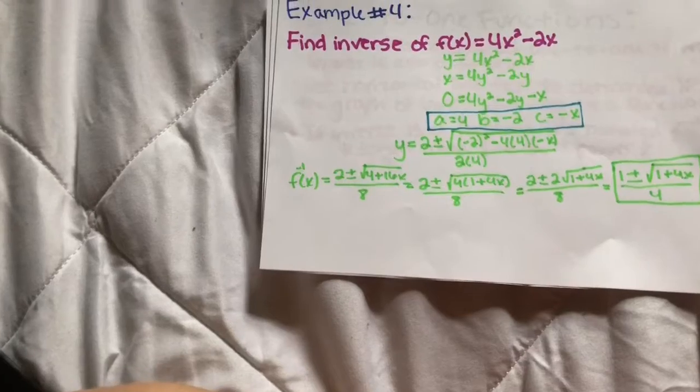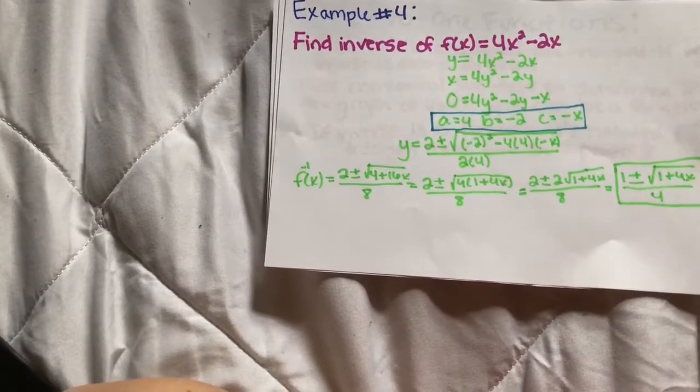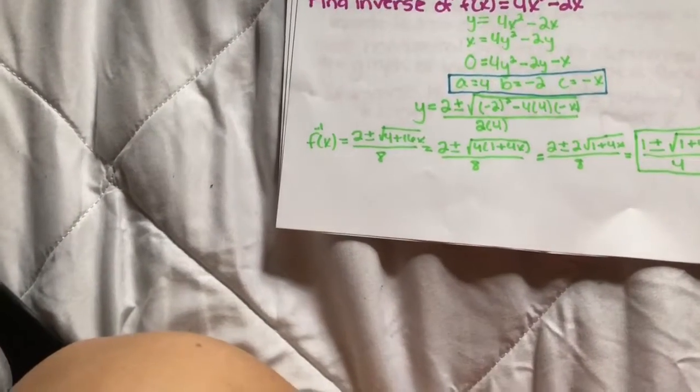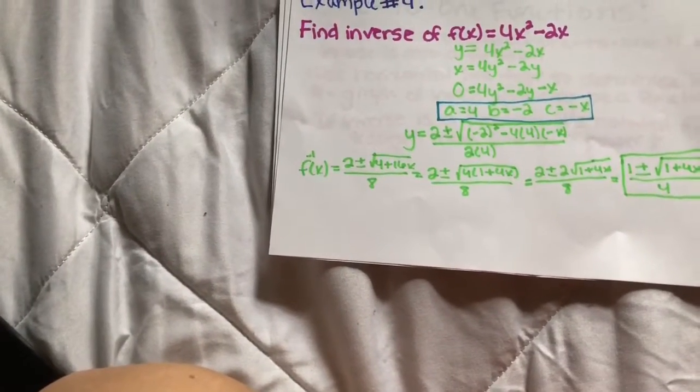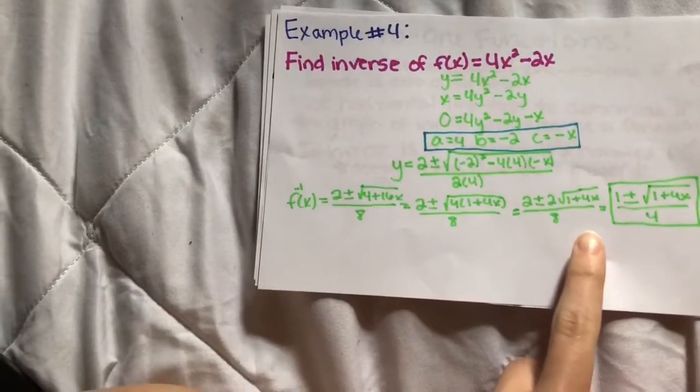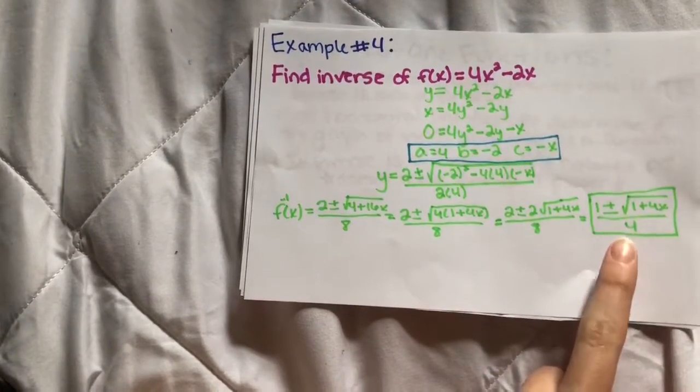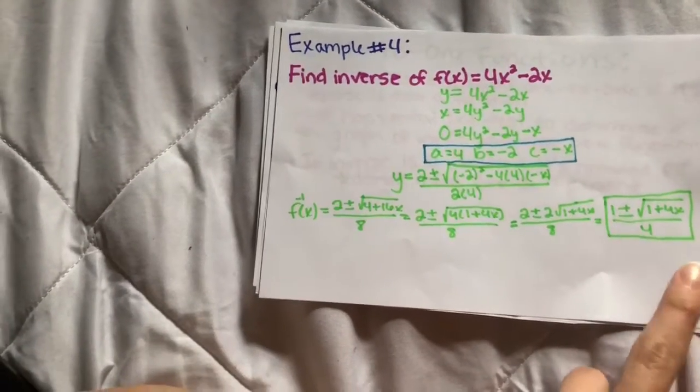Simplifying this will get you to the inverse f⁻¹(x) equals (2 ± √(4 + 16x)) / 8. Then pull out the 4 and get (2 ± 2√(1 + 4x)) / 8. And all of this simplified will get you to (1 ± √(1 + 4x)) / 4.